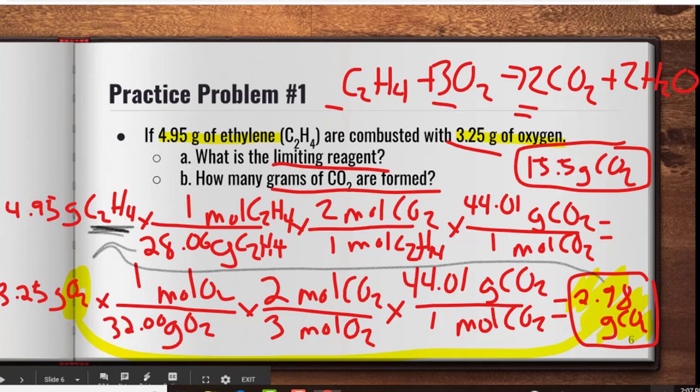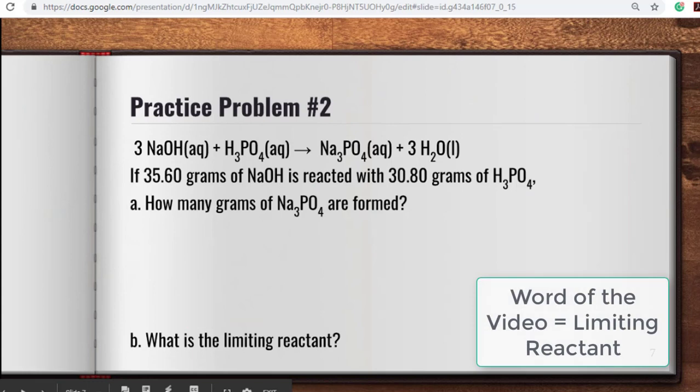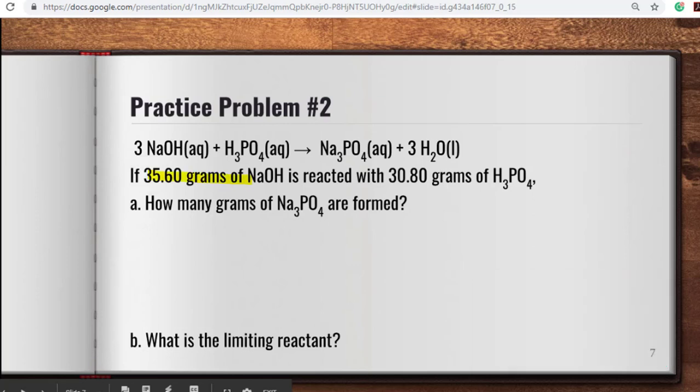Let's move on to one more practice problem. With this particular reaction, it is already balanced for you. We just need to do our stoichiometry. Here we're given 35.6 grams of NaOH, 30.80 grams of H3PO4, and we want to know how many grams of Na3PO4 are formed. We're going to perform both stoichiometry problems here and figure out what the limiting reactant is.